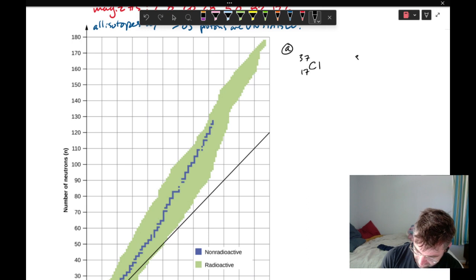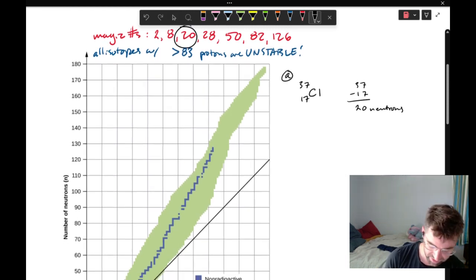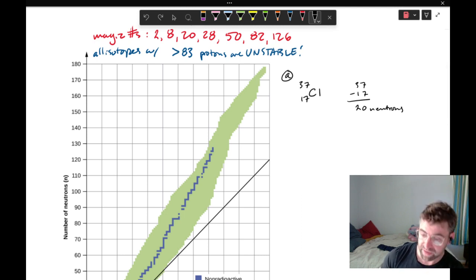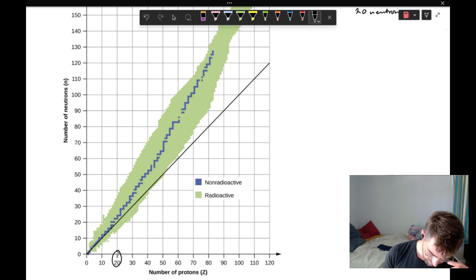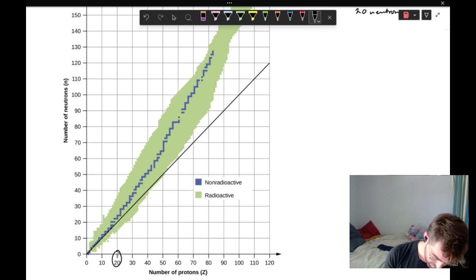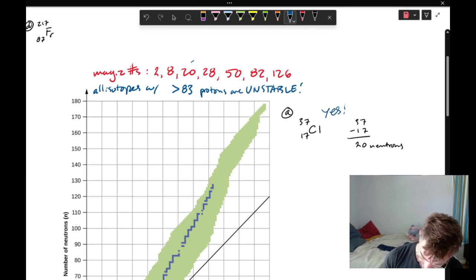And chlorine has an atomic number of 17. So we've got to do some math really quick. 37 minus 17 gives us 20, and that is the number of neutrons. Because remember, 17 was the number of protons. And 37 was neutrons plus protons. So 20 neutrons. 20 neutrons happens to be one of these magic numbers. And so we can say without any more analysis that yes, this is stable. For the sake of taking a peek at this chart, we have number of protons and number of neutrons.